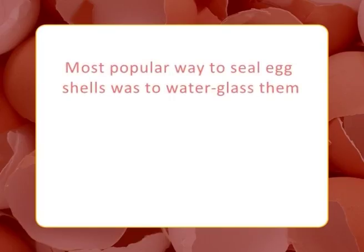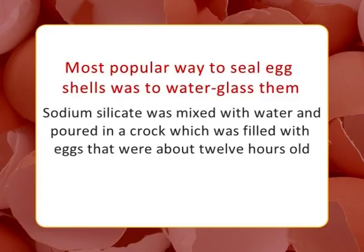Probably the most popular way to seal egg shells was to water-glass them. A chemical commonly known as sodium silicate was mixed with water and poured into a crock filled with eggs about 12 hours old. The sodium silicate would clog the pores in the shells and make them airtight.